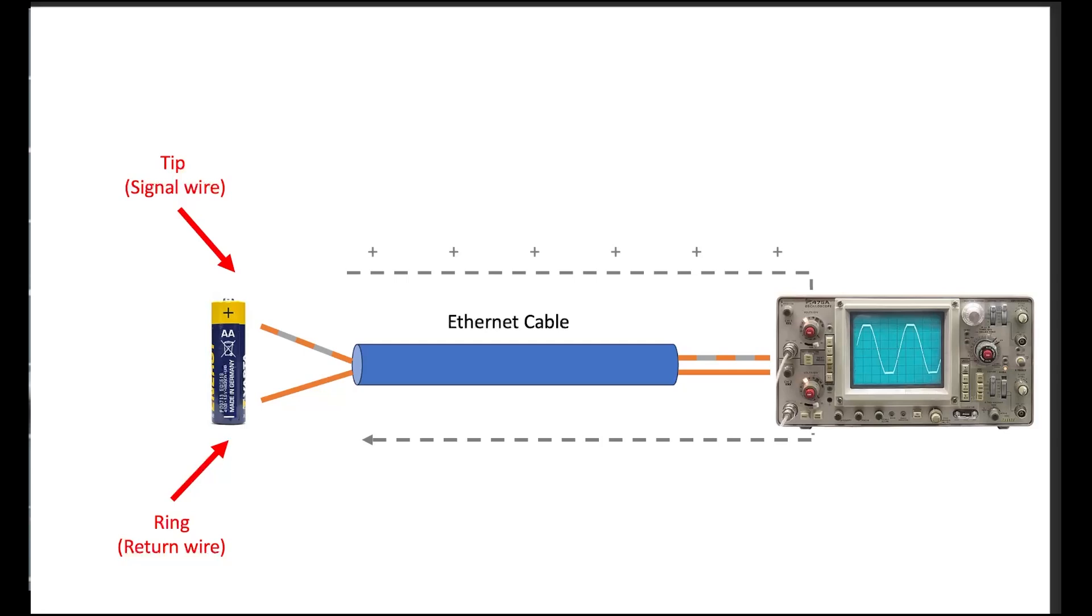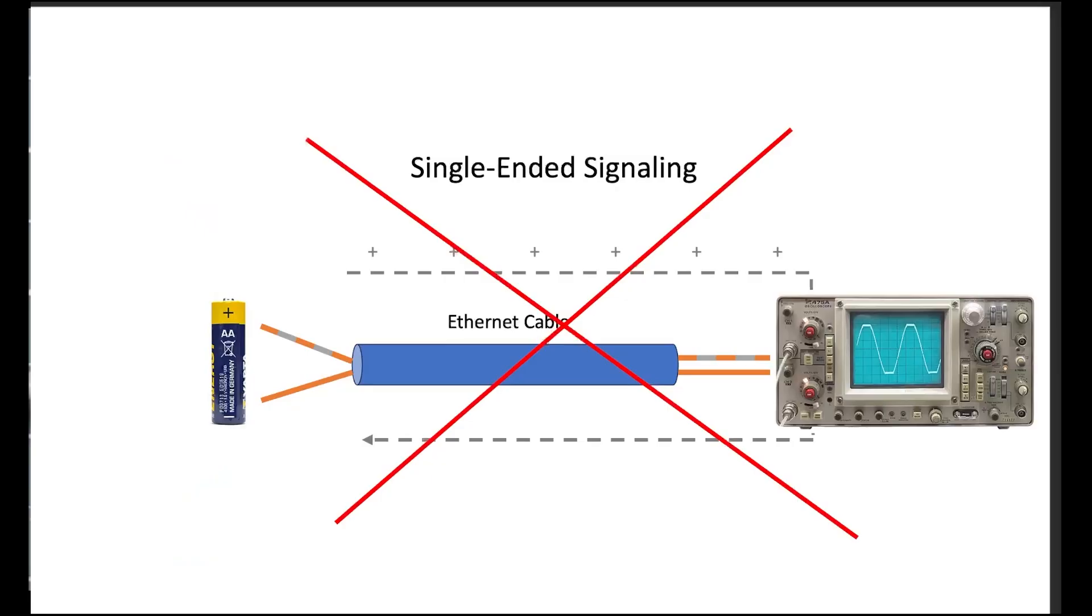Okay, in my demo, I had the current flowing down the signal wire. And returning to the battery, the circuit is effectively a loop. In electronics, this is called single-ended signaling. But is this how Ethernet actually works, where a signal is returned back to its source? And the answer is no. No, it's not how it works at all.